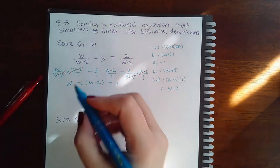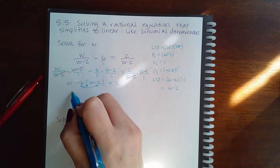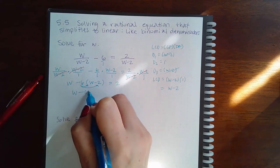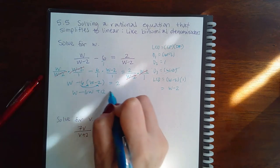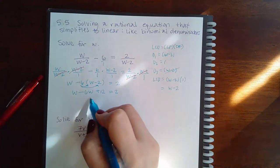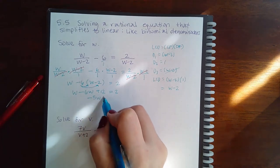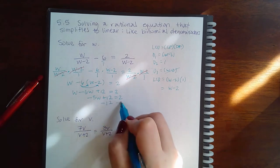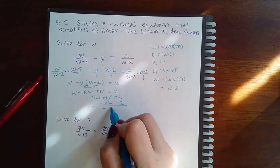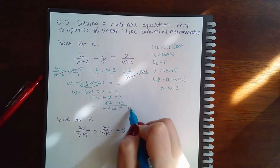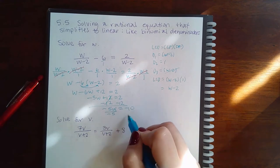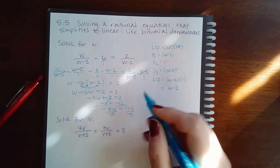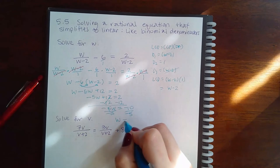Where do I go from here? I have to distribute this negative 6. So w minus 6w plus 12 equal to 2, combine my like terms, negative 5w plus 12 equal to 2, minus 12 on both sides. We get negative 5w equals negative 10, divide by negative 5 on both sides, and we get w equals positive 2.